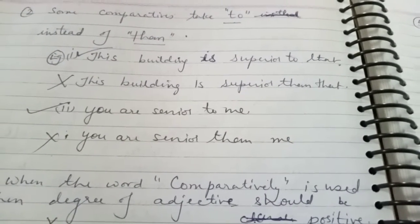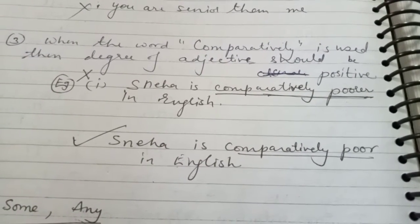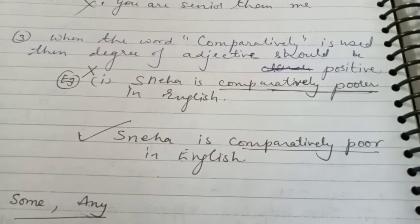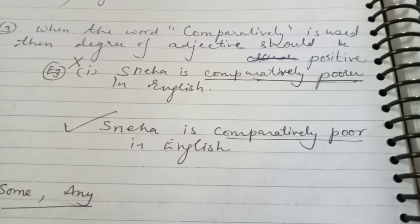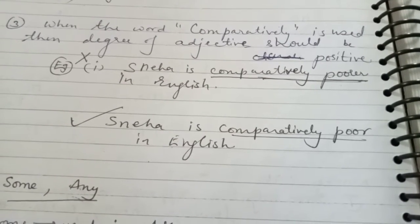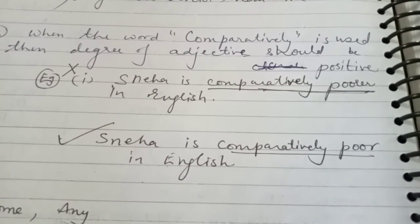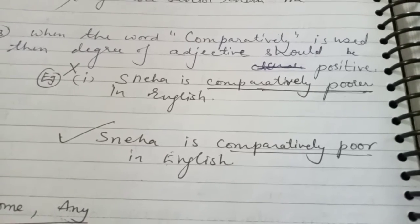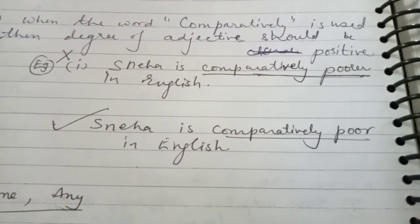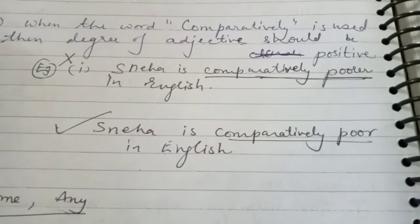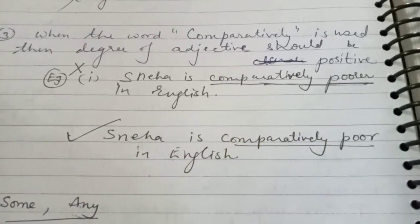The third point says: when the word 'comparatively' is used, the degree of the adjective should be positive. For example, poor, poorer, poorest are three degrees. But when the word 'comparatively' appears in the sentence, you must use the positive degree adjective. In a nutshell, if the word 'comparatively' has come, you will write only the positive degree adjective.